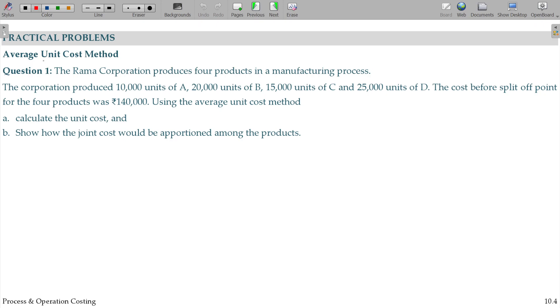Apportionment of joint cost to the joint products using the average unit cost method. The Rama Corporation produces four products in a manufacturing process.